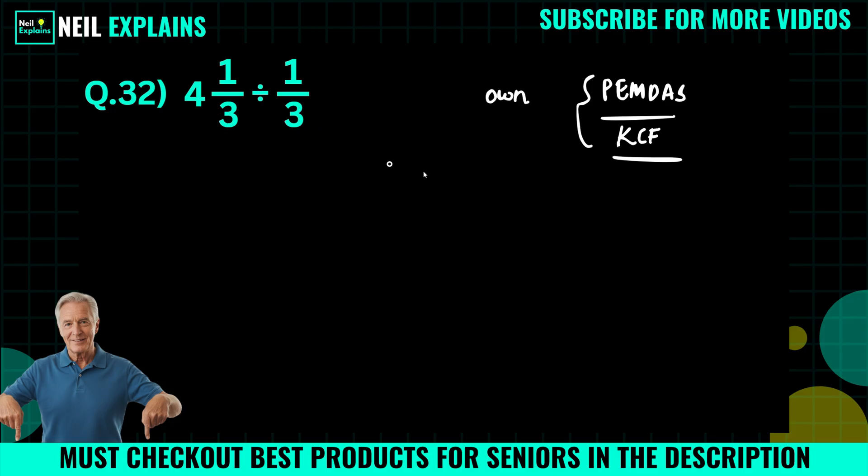We have here 4 1/3. 4 1/3 can be written as 4 times 3, that is 12, plus 1, that is 13 divided by 3. So we will simply write 13 divided by 3.